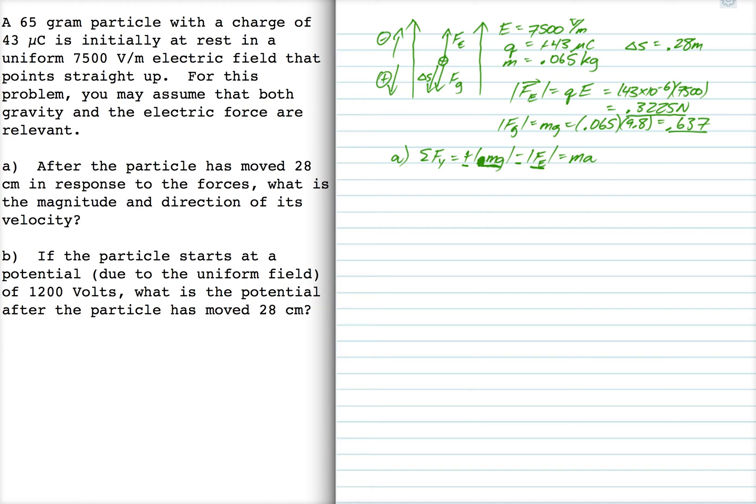So that's plus 0.637 minus 0.3225 is equal to the mass times the acceleration. That gives us an acceleration of 4.84 meters per second squared directed downward.